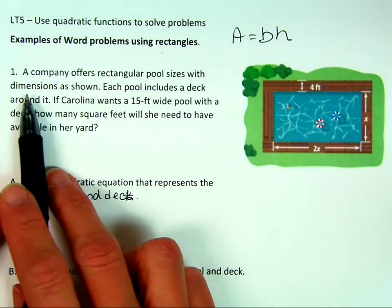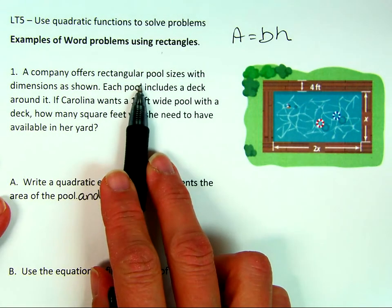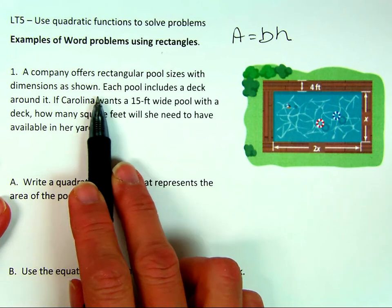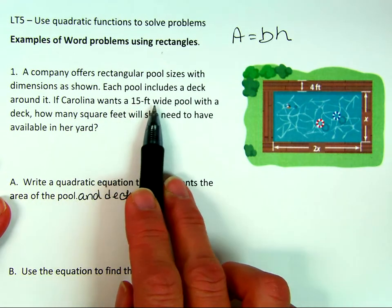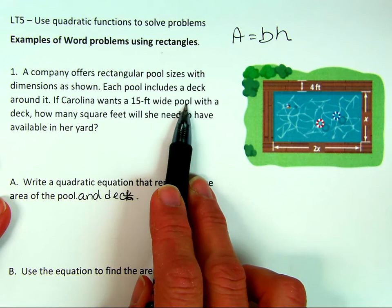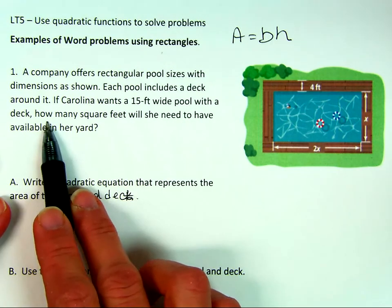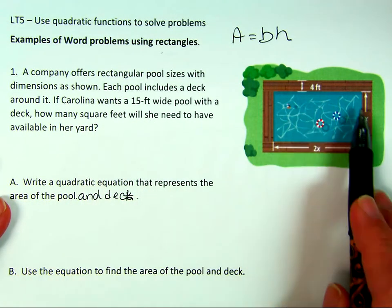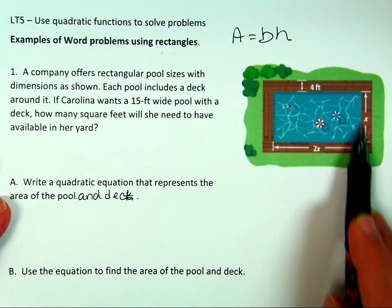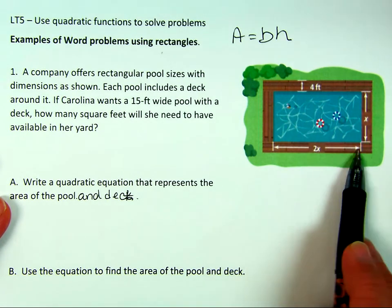Let's read the problem. A company offers rectangular pool sizes with dimensions as shown. Each pool includes a deck around it. If Carolina wants a 15-foot wide pool with a deck, how many square feet will she need to have available in her yard? So we know this is 15, and we know that whatever your width is, the length is doubled, so that's going to be 30.